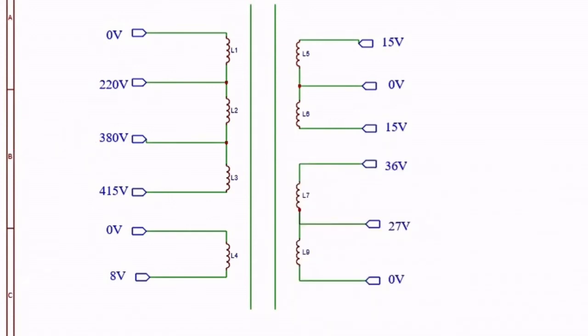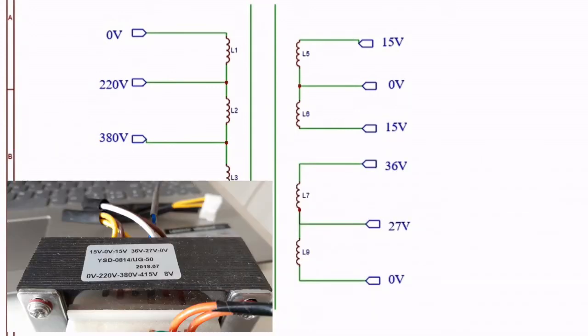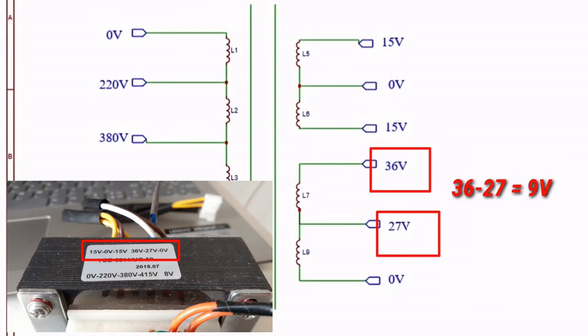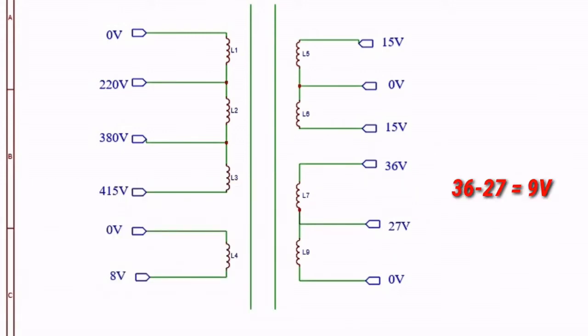Now looking at the output section, we can see that it consists of 15 volts as well as 30 volts, which means 15-0-15, where 0 acts as the center tap. So we can get 15 volts as output, 30 volts as output, 36 volts as output which is isolated from 15-0-15, 27-volt output, and finally 9-volt output, which is the difference between 36 and 27.